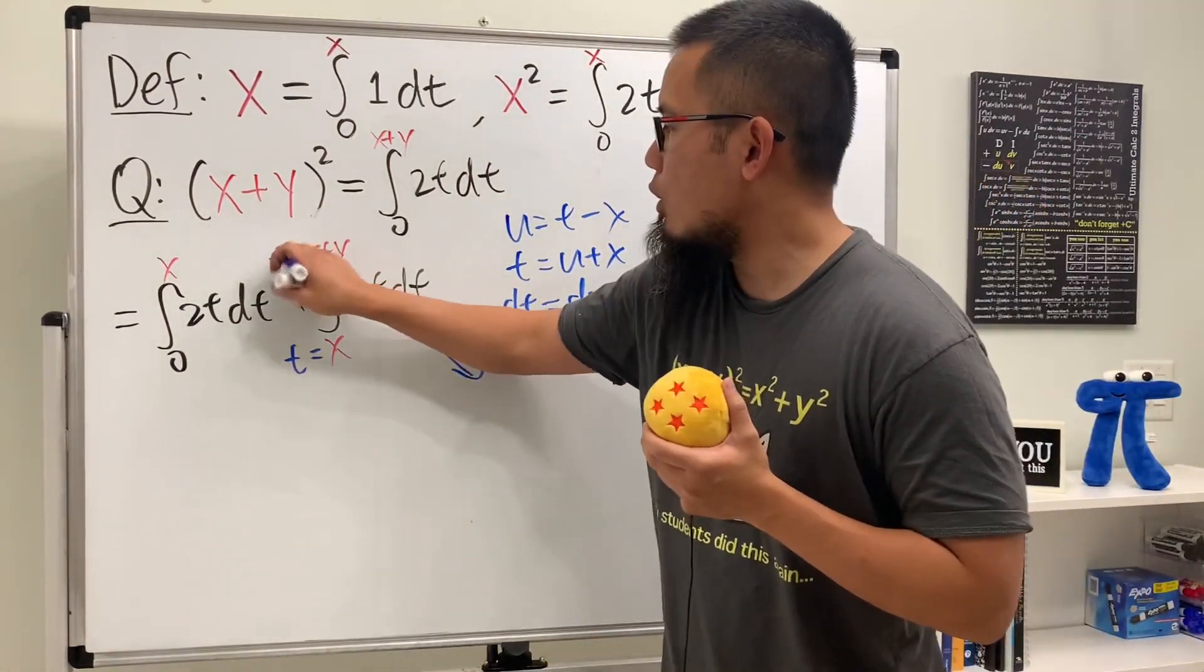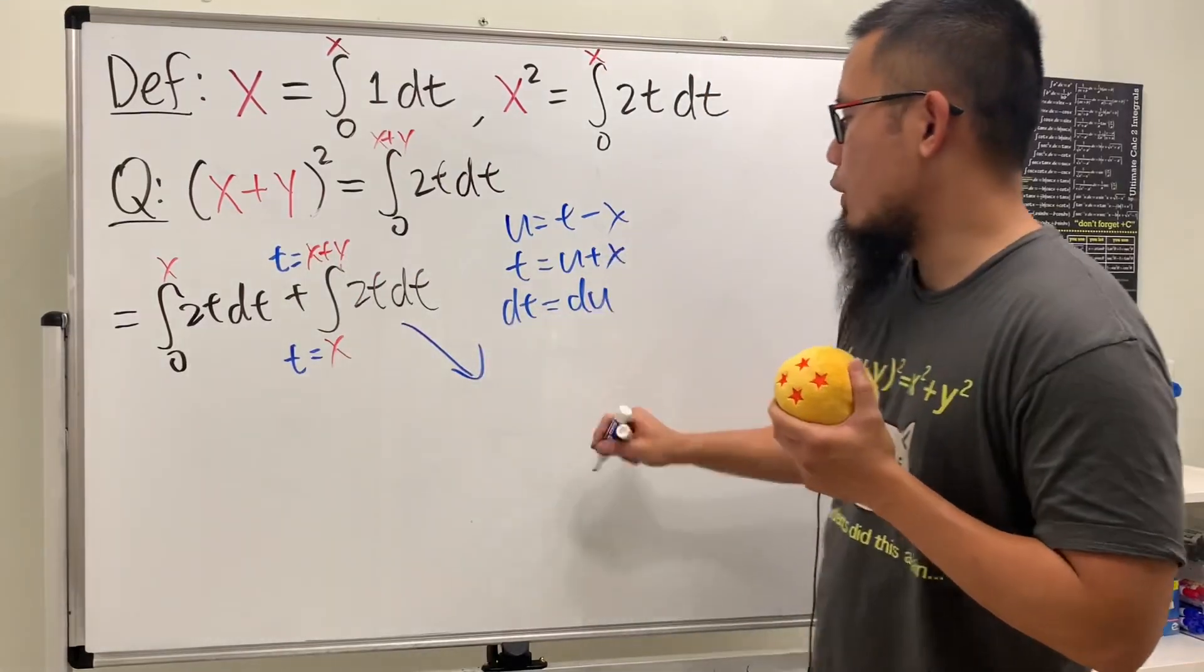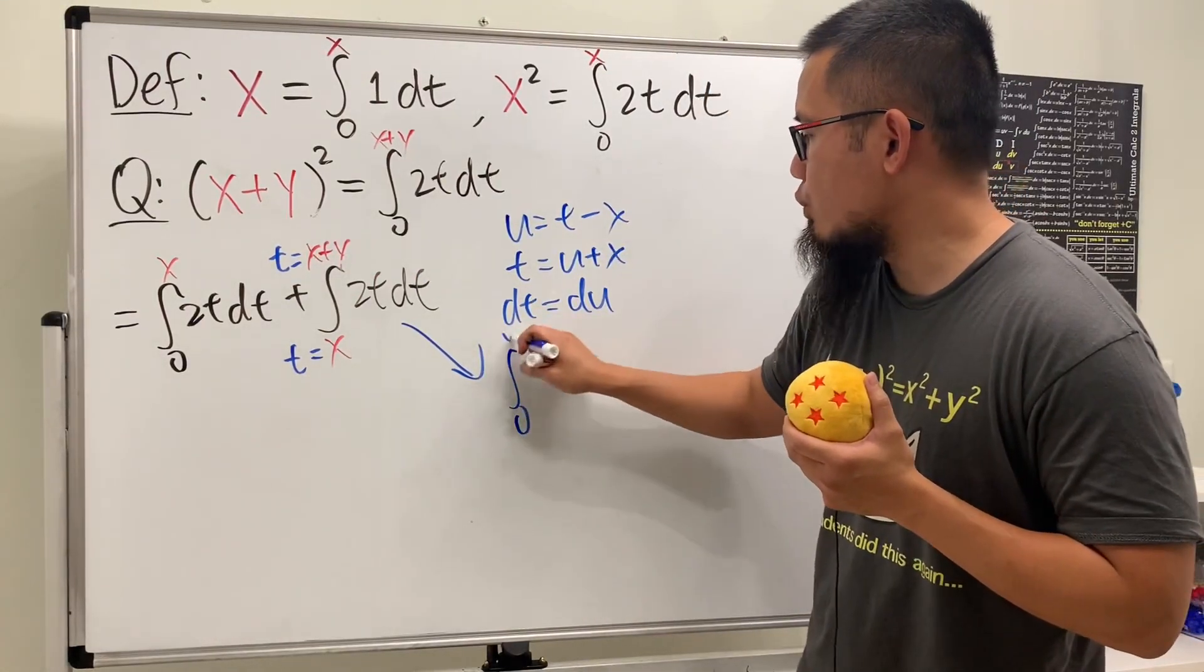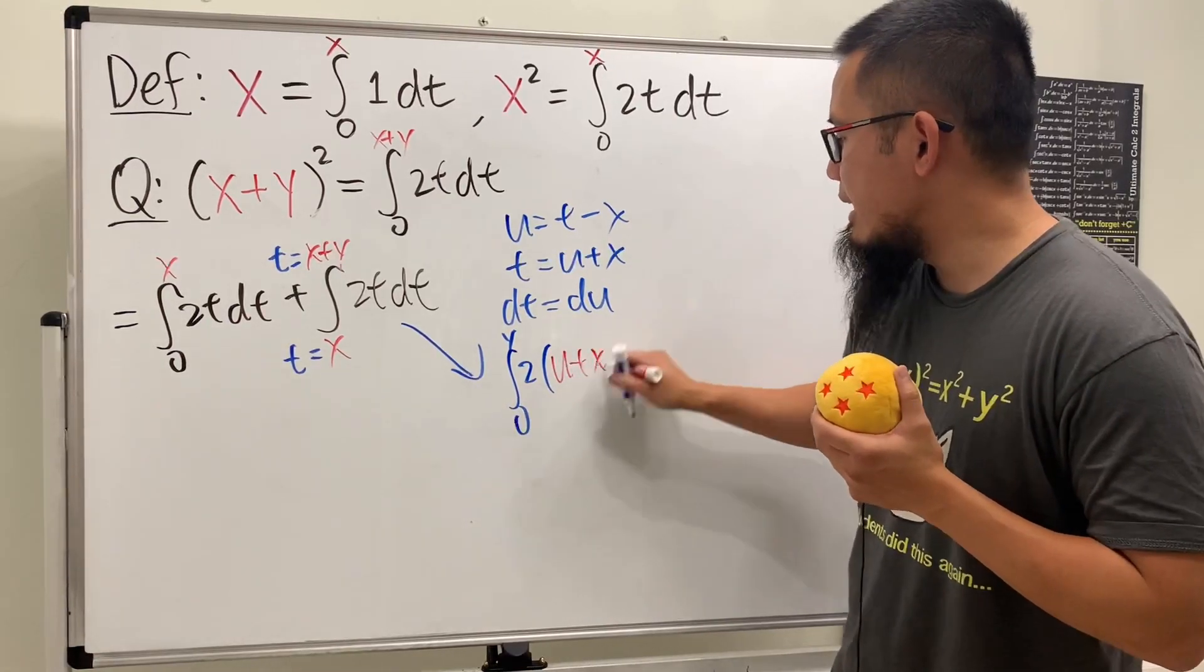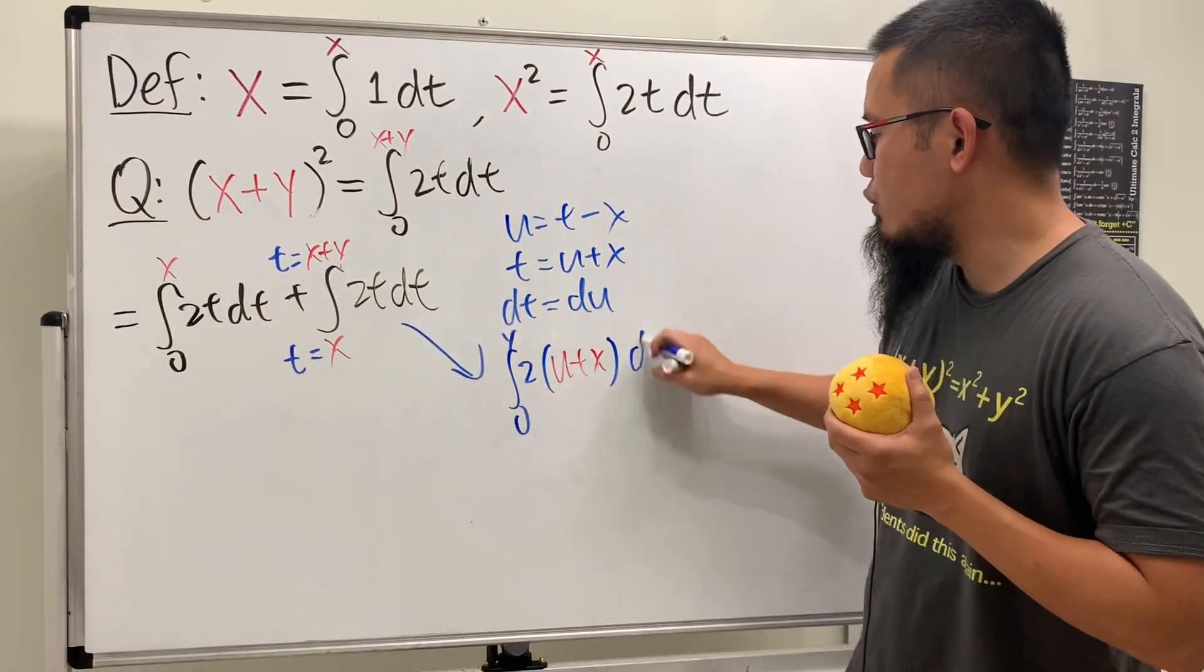Now we can take this integral to the u world. Well, put this and that into here, we will see that u will be going from 0 to y, and we have 2 and t is equal to u plus x right here. And then we also know that dt is equal to du, very nice, right?